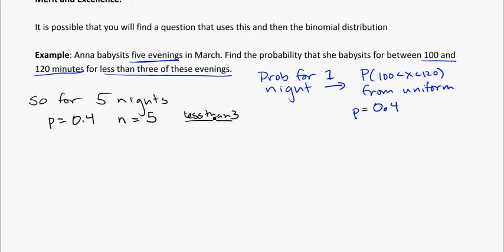And we're looking for less than three. So this is going to be binomial, because we either have she's between 100 and 120 minutes, or she's not, our two outcomes. The probability is constant the whole way through. We assume that it's independent, that babysitting one night won't have an effect on the babysitting the following night.